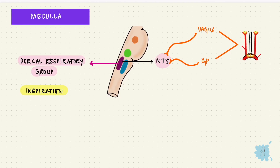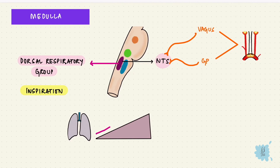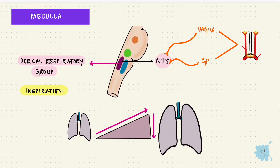The dorsal group regulates inspiration. Inspiration starts off weak, steadily rises, and then ceases abruptly, and with elastic recoil of the lungs there is expiration. So it is a ramp signal — there is a slow rise in the volume of the lungs and there are no inspiratory gasps.